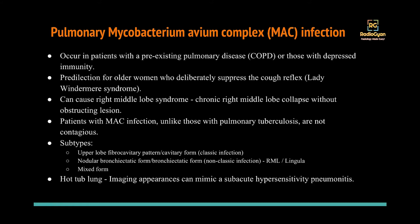It commonly occurs in patients with pre-existing pulmonary disease, such as COPD, or in immunocompromised patients. It has a predilection for older women who deliberately suppress their cough reflex. In older times, because of the patriarchal society, older women were not allowed to speak up and thought that coughing in public was not the right thing to do — so they suppressed their cough, possibly leading to some form of aspiration.